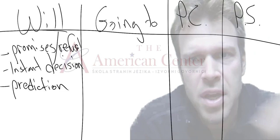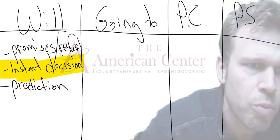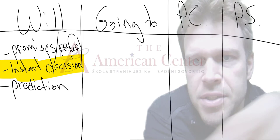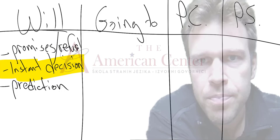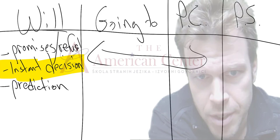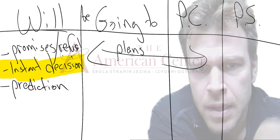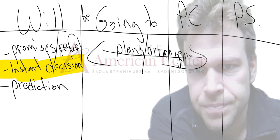So, instant decisions, predictions. And we use it for other things, but for now, we'll just keep it at that. Instant decisions, I would say, we'll give you more context here in a bit, but instant decisions is what we're really focused on. And then we'll talk about prediction in comparison with going to. So, going to and present continuous. Now, we're getting into our plans and arrangements now.